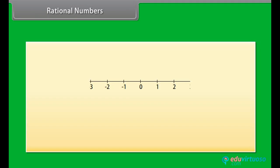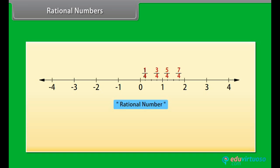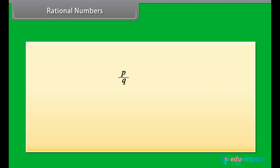Now if we see between the numbers 0 and 1, or 1 and 2, we will see numbers like 1 by 4, 3 by 4, and so on. The collection of these numbers is called rational numbers. Rational numbers are denoted by the symbol Q. Rational numbers are written in the form P by Q, where P and Q are integers, and Q is not equal to 0.